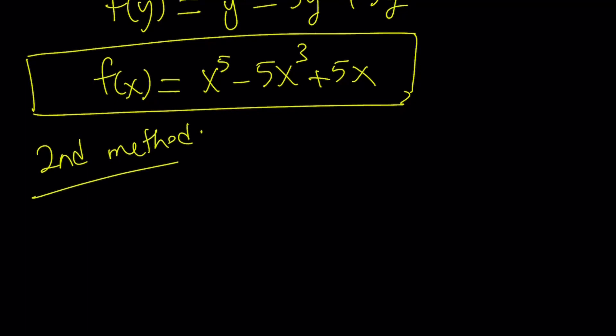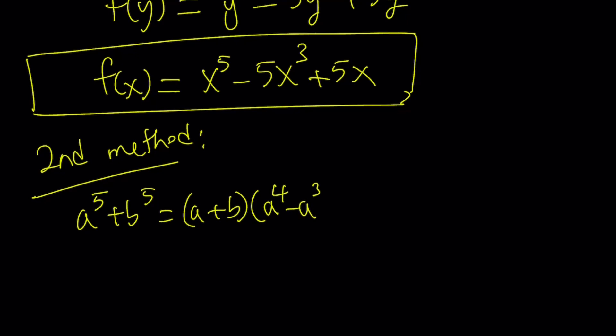Let's go over the second method, which uses the formula for a to the fifth plus b to the fifth. If you have the sum of two odd powers, it's always factorable: a plus b is a factor, and the other factor is a to the fourth minus a cubed b plus a squared b squared minus a b cubed plus b to the fourth. It's pretty much like the binomial theorem for the second factor but without the binomial coefficients. If you distribute, you get the sum of fifth powers.